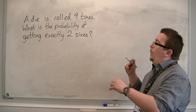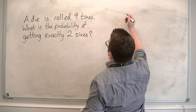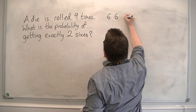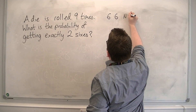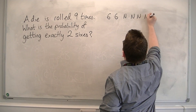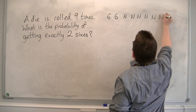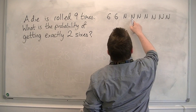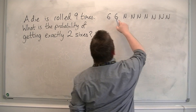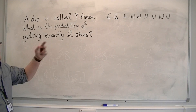One of the possibilities would be to get two sixes in a row, followed by not a six, seven times — that's nine rolls total. So that is one of the possibilities.